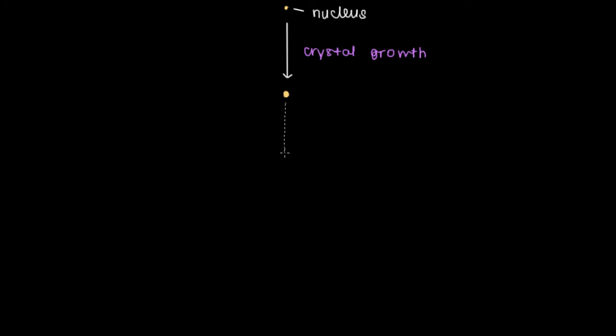From there, what can happen is several of these crystals can aggregate. So I'll show you three of them here that are formed and larger. They've grown, and now they're aggregating. They're interacting together, they're forming this type of complex. So we have crystal aggregation.